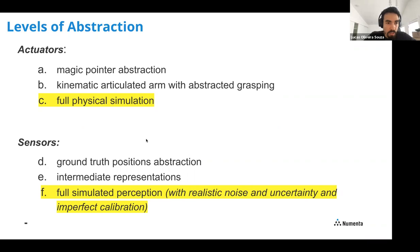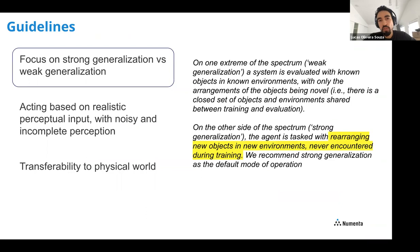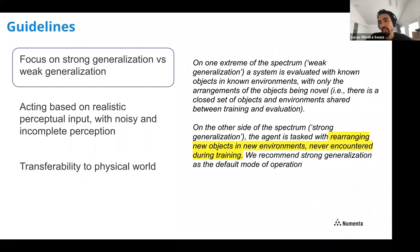One guideline is to focus on strong generalization rather than weak generalization. Weak generalization means evaluating with non-novel objects and non-novel environments — both environments and objects were seen during training, even if the arrangement is novel. Strong generalization means the agent is tasked with rearranging new objects in new environments — for example, trained to close a fridge, but now must move a chair in a completely different room. The authors recommend strong generalization as the default mode.